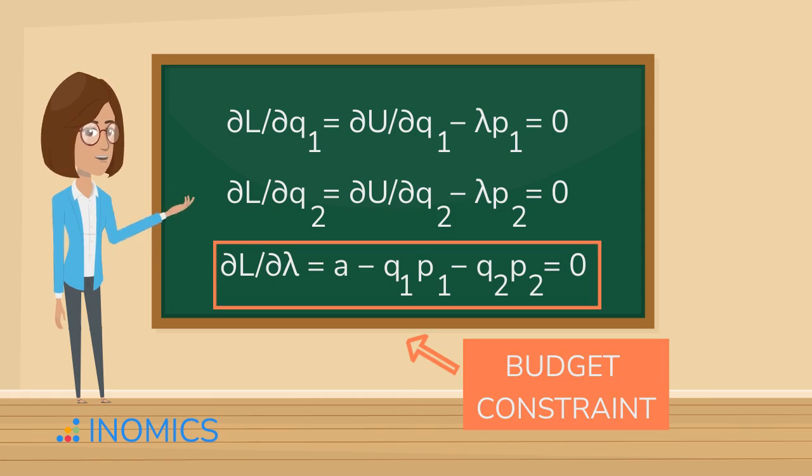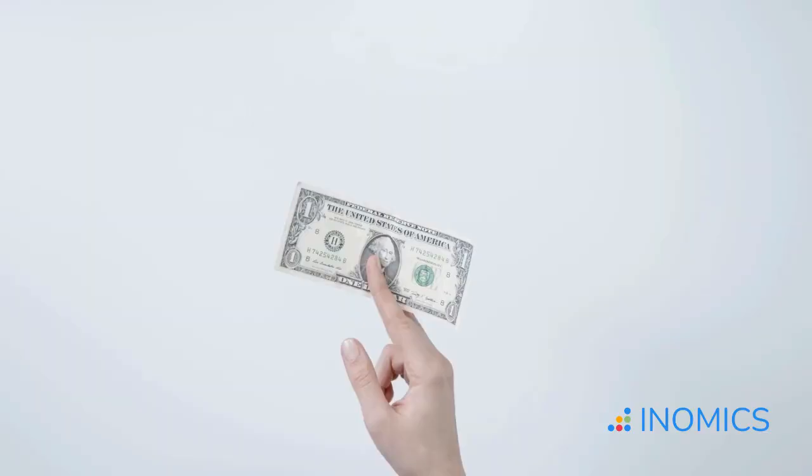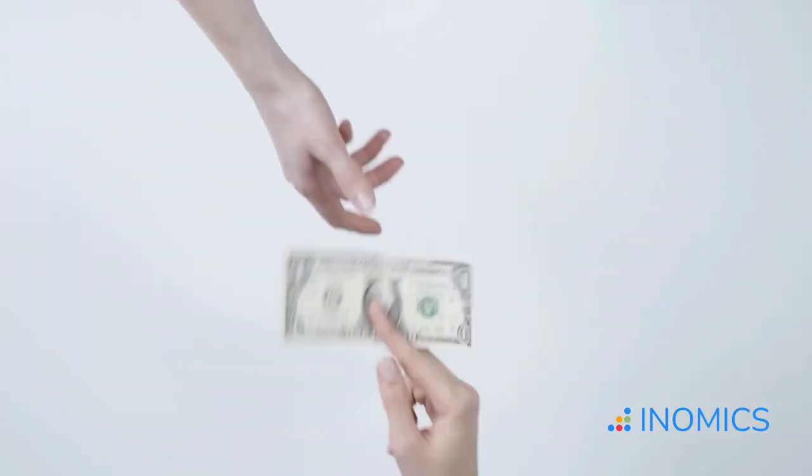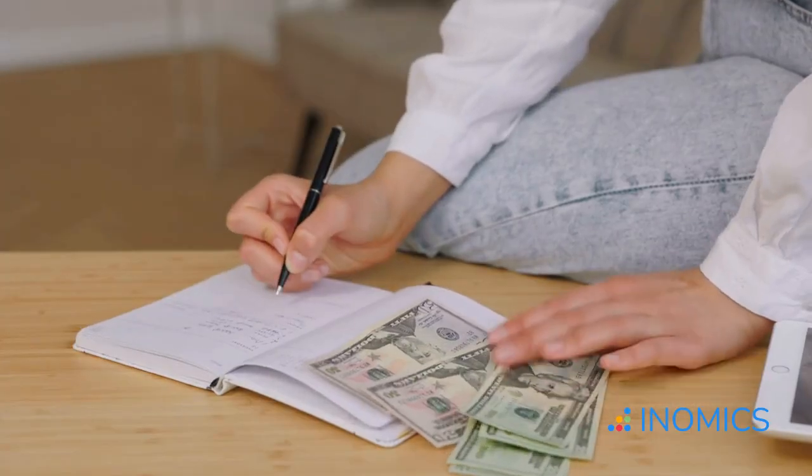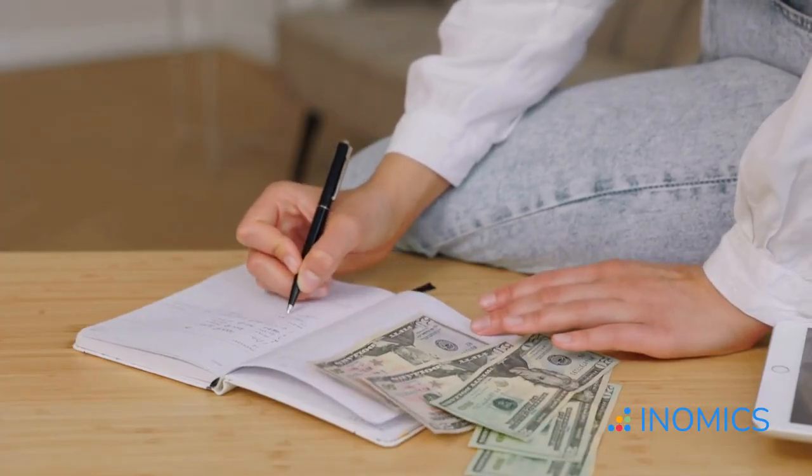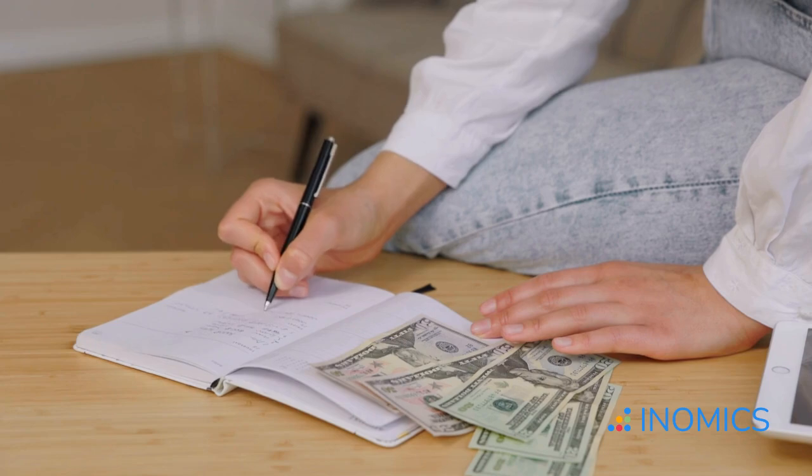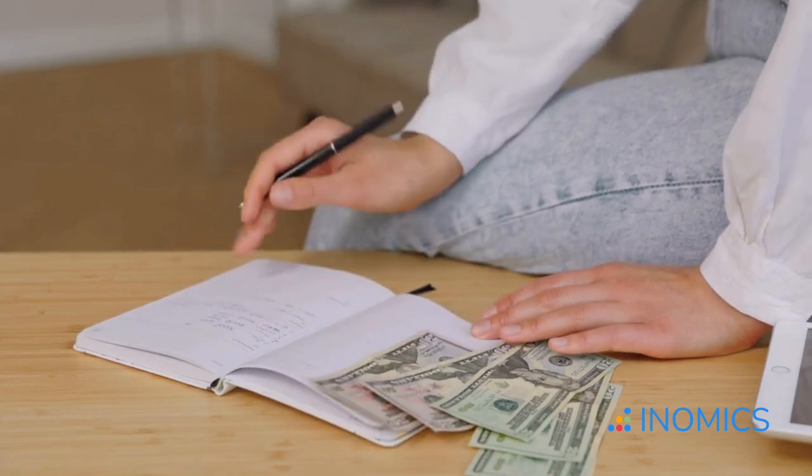So, what's the deal with lambda, the Lagrange multiplier? Think of it as the rate at which utility increases when the budget increases by one unit. For example, one dollar. In other words, lambda tells you how valuable one extra dollar is to the consumer. Lambda answers the question, how much more utility can one dollar buy this consumer? If lambda equals five, then an extra dollar of budget would let the consumer increase their utility by five. Pretty cool, right?